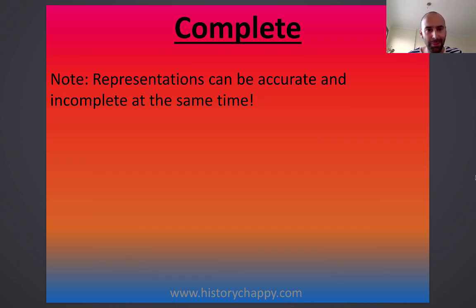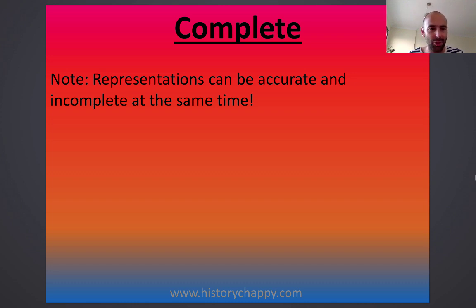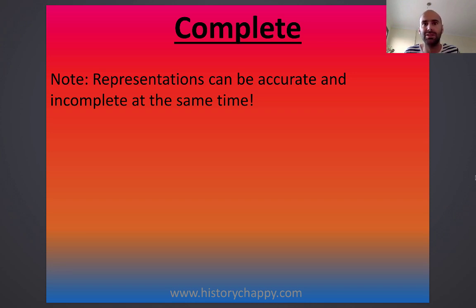Just be wary, though — representations can be accurate and incomplete at the same time. If you asked me about Arsenal's most recent performance, I could tell you that they lost 1-0, which might be accurate — and hopefully it would be, because I don't like Arsenal. But it could be incomplete, because I might not tell you about the previous five games which they might have won. So I've been accurate in specifying they lost, but not complete, because I've not talked about the previous five games which they won. They're not the same thing.